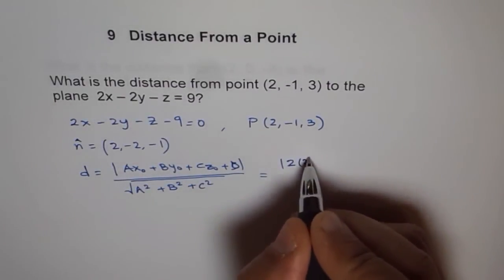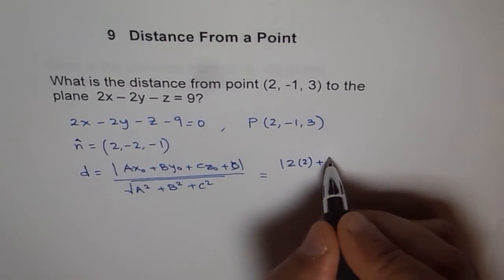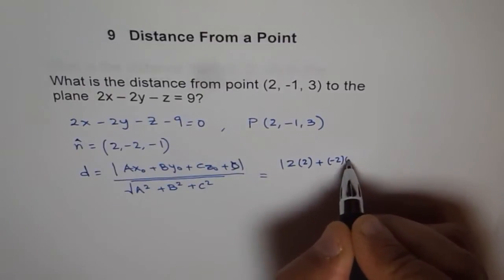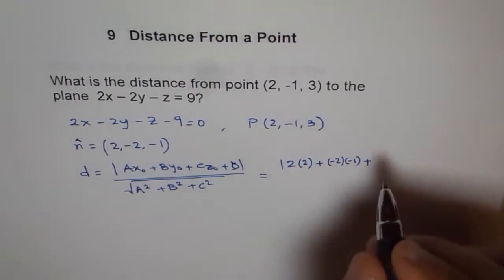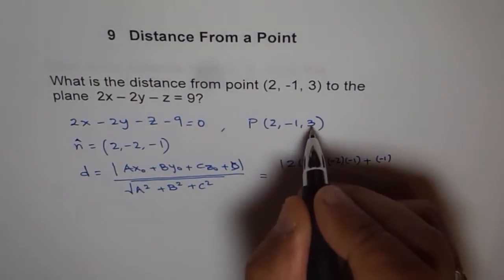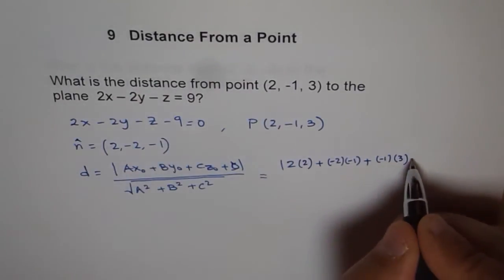We get 2 times 2, plus B is -2, so we get -2 times -1, plus C is -1 times 3, and D is -9.